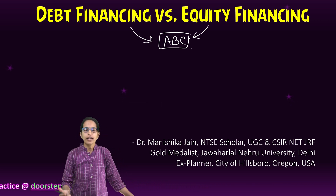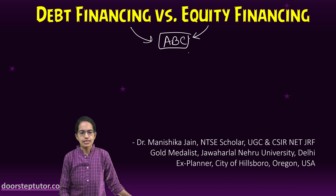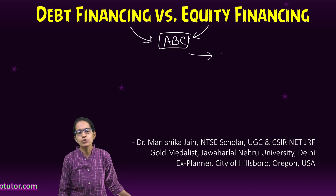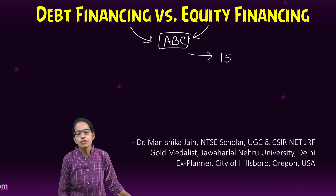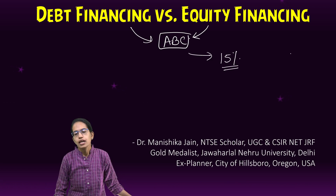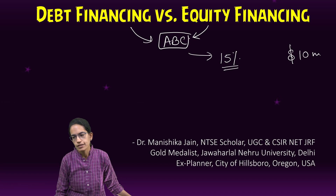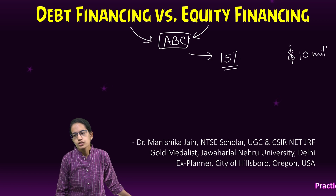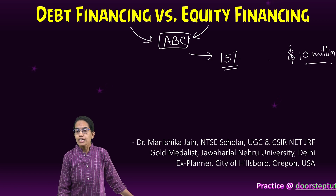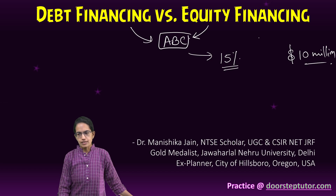If I go for equity financing, let's say I dilute 15% of my stake in the company and in turn I get let's say $10 million in funding. So this is an example of equity financing.